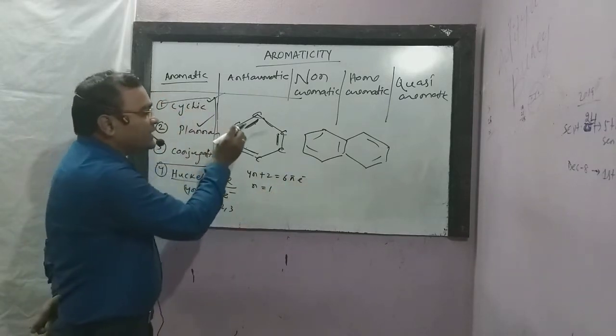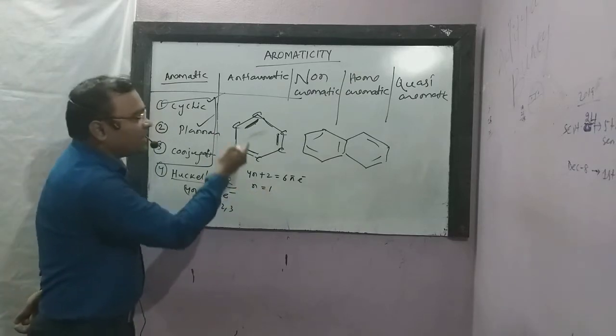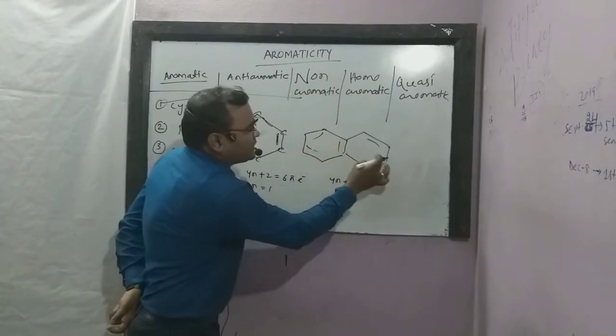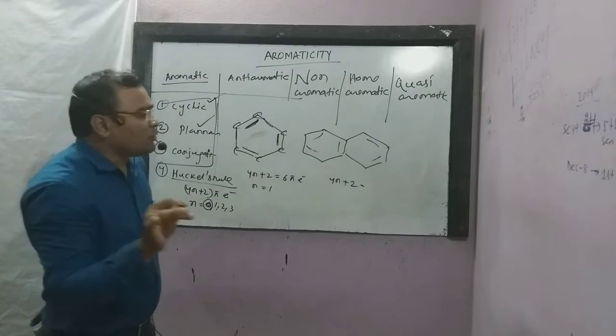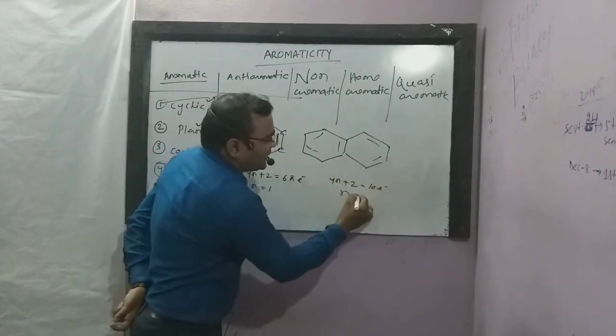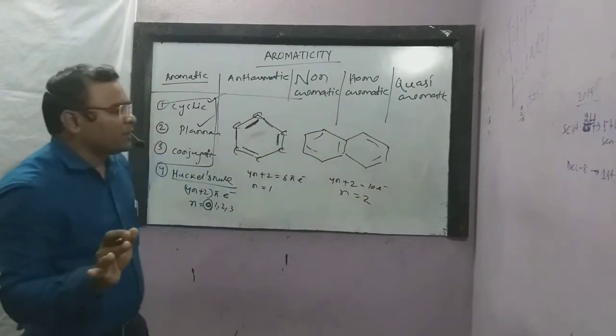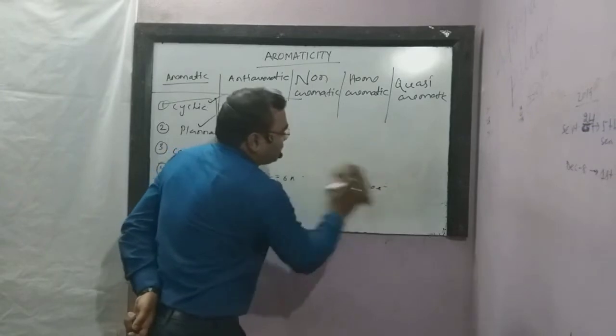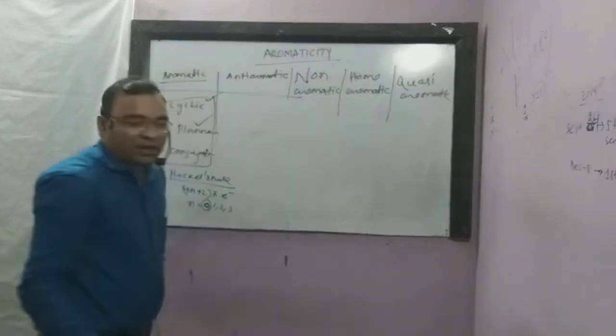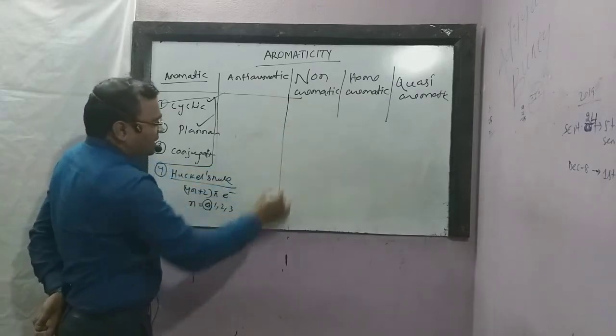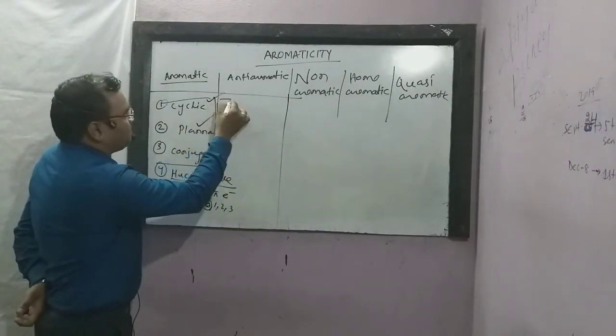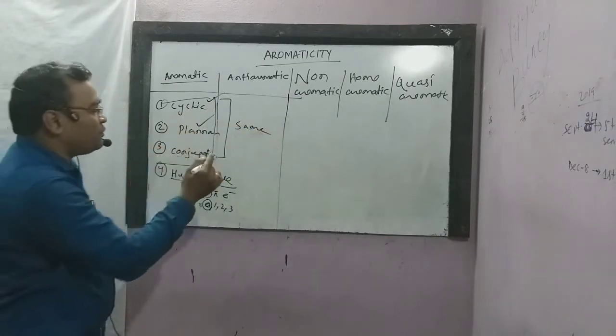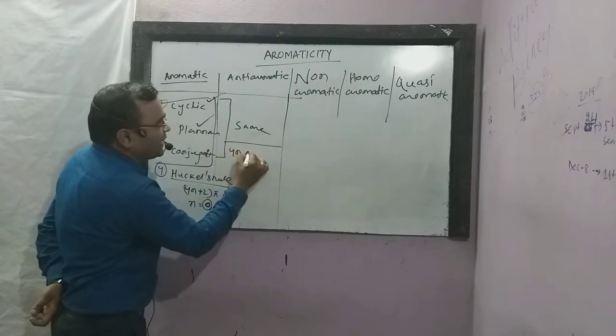So it is an aromatic compound. The first three conditions are the same. The fourth one is most important: 4n plus 2 pi electrons.